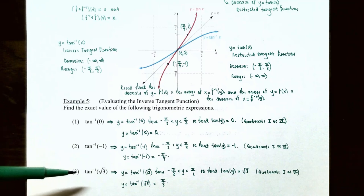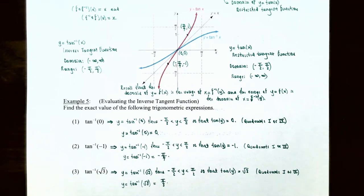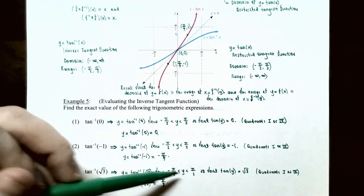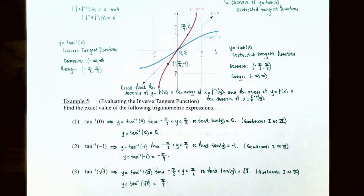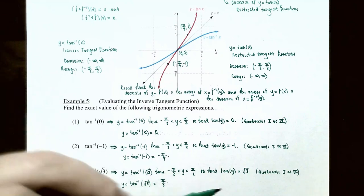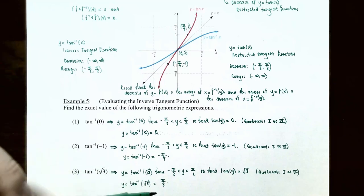Number three: inverse tangent of square root three. Call y equals inverse tangent of square root three. We're finding the angle y between negative pi over 2 and pi over 2 where tangent of y equals positive square root three. Since the value is positive, tangent is positive in quadrants one or three, and our restricted domain puts us in quadrant one. The angle in quadrant one where tangent equals square root three is pi over three. So y equals inverse tangent of square root three equals pi over three radians.